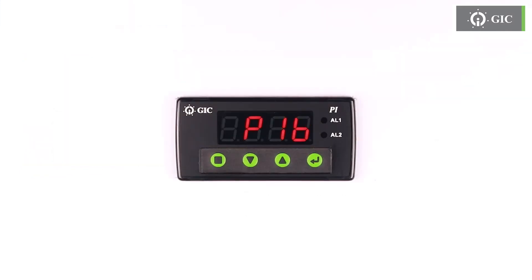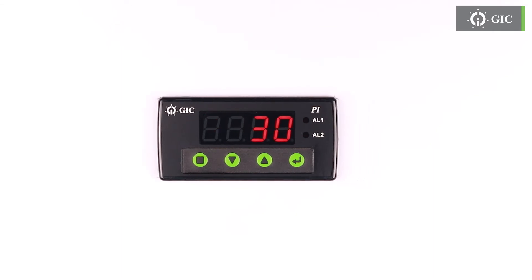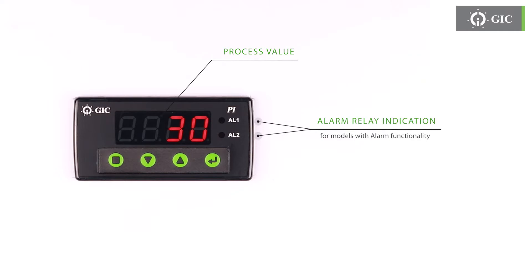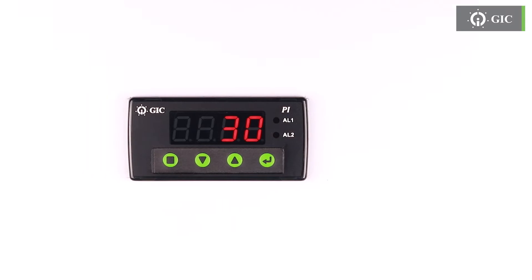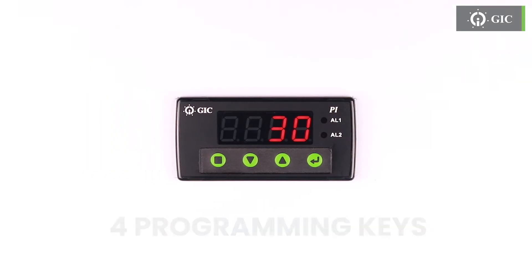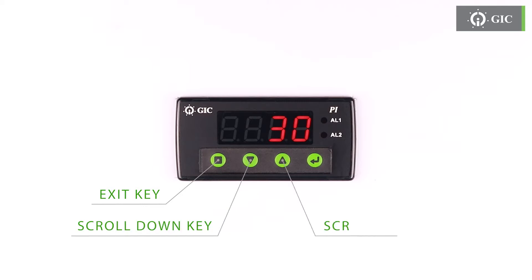Let us see the front panel details. The display will show the process value. AL1 and AL2 stand for alarm relay indication for models with alarm functionality. There are four keys for programming the device: an exit key, a scroll down, a scroll up, and an enter key.